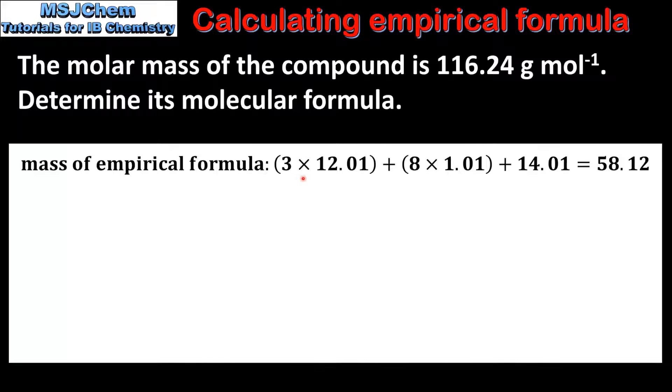So the empirical formula had 3 carbon atoms, 8 hydrogen atoms, and 1 nitrogen atom. If we add these up we get a mass of 58.12. Next we divide the molar mass by the mass of the empirical formula. So that's 116.24 divided by 58.12, which gives us 2.